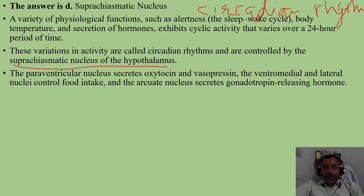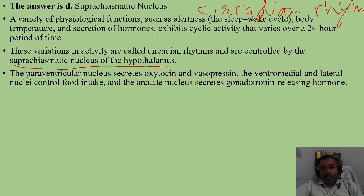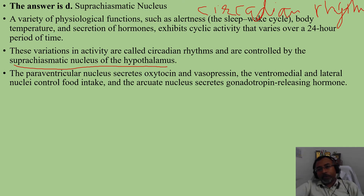The paraventricular and supraoptic nuclei together secrete oxytocin and vasopressin. The ventromedial and lateral nuclei of the hypothalamus control food intake — one is the hunger center and another is the satiety center. The arcuate nucleus controls gonadotropin-releasing hormone, and is important for reproductive behavior and reproductive hormones.